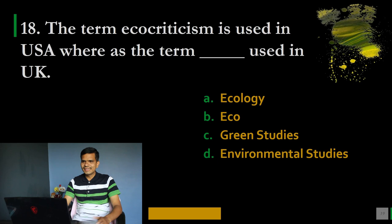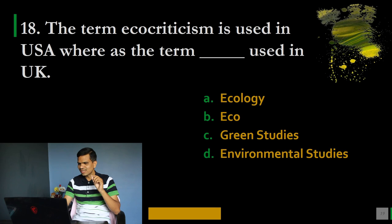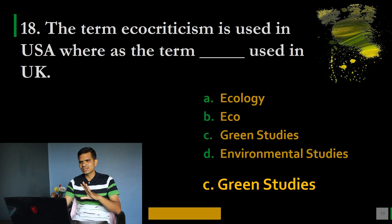Question number 18: The term ecocriticism is used in the USA, whereas the term dash is used in the United Kingdom. Which term is used in Britain for ecocriticism? Options: A. Ecology, B. Eco, C. Green Studies, D. Environmental Studies. The correct option is C, Green Studies. The word green studies is very famous in Britain or the United Kingdom, while ecocriticism is used in America.